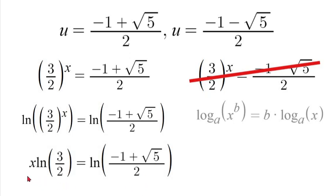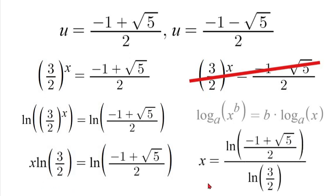Now we're just going to divide by natural log of 3 over 2, so we can get our x value by itself. So x equals natural log of negative 1 plus square root of 5 over 2, all over natural log of 3 over 2. That's the final answer to this problem.